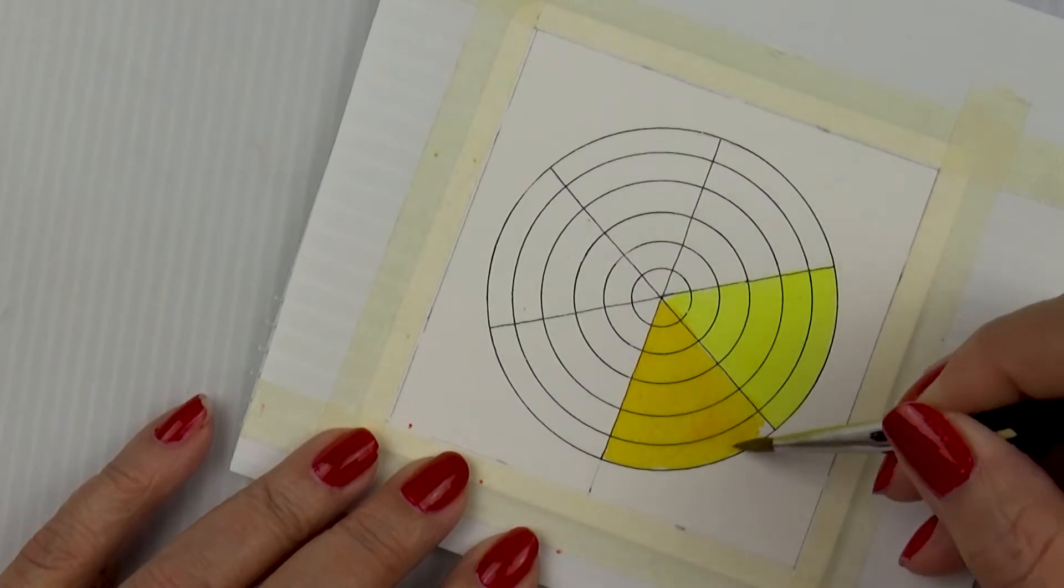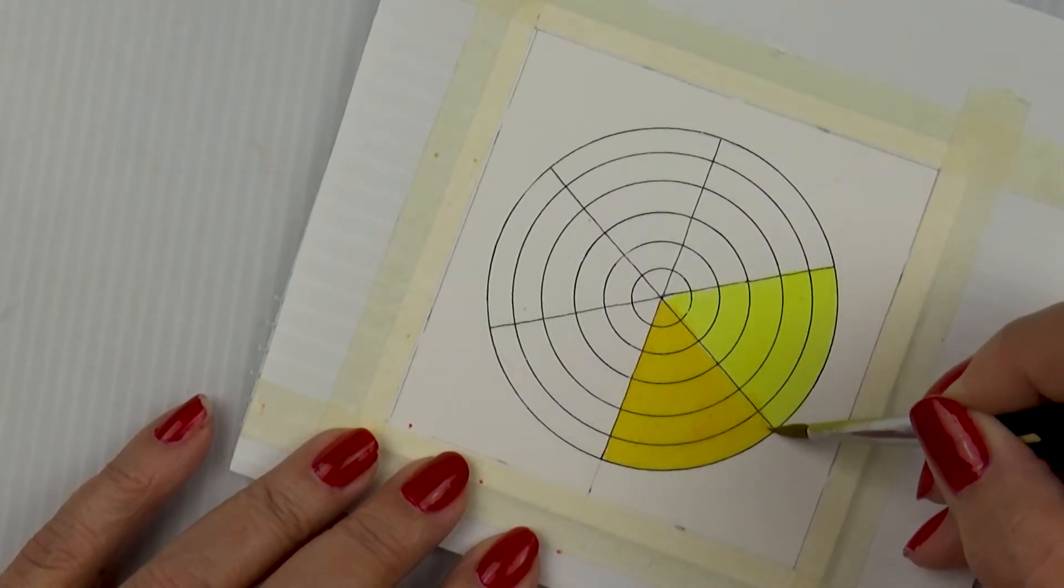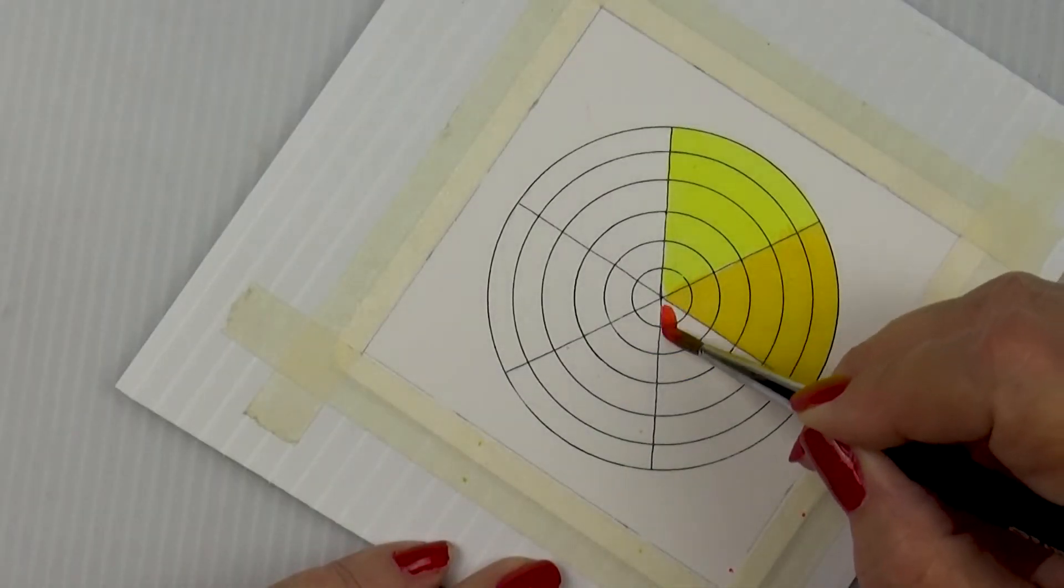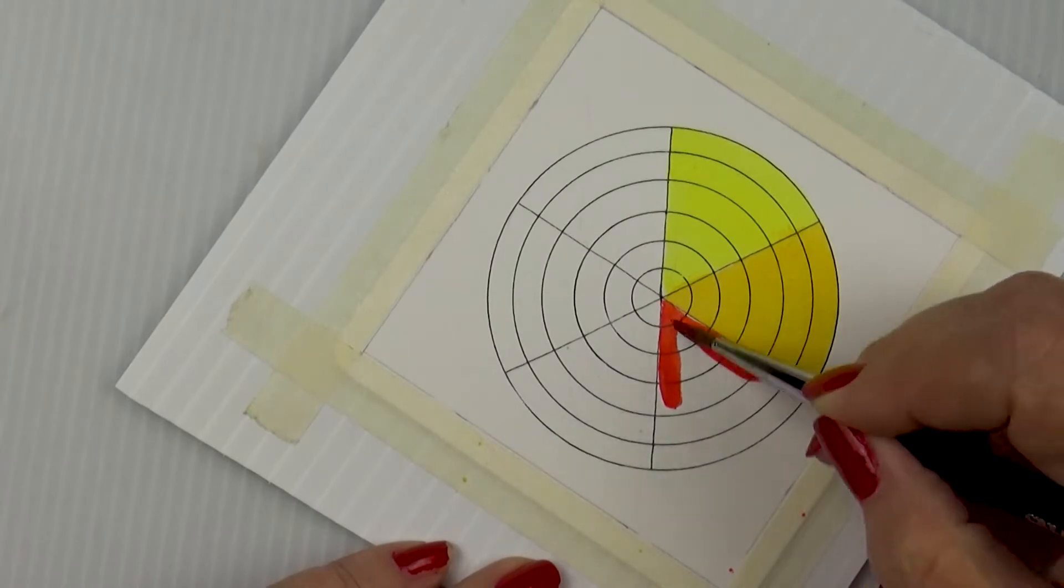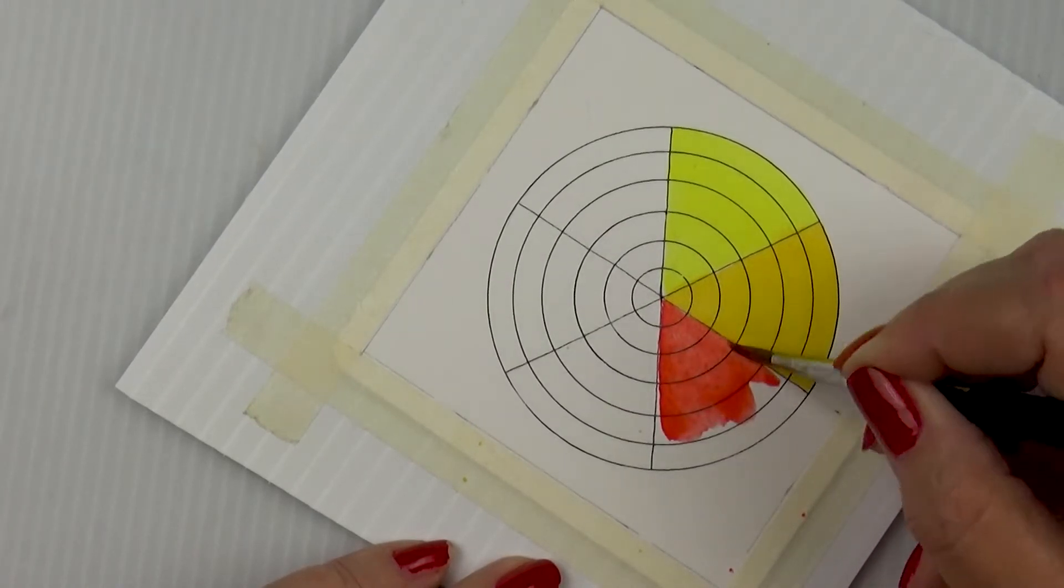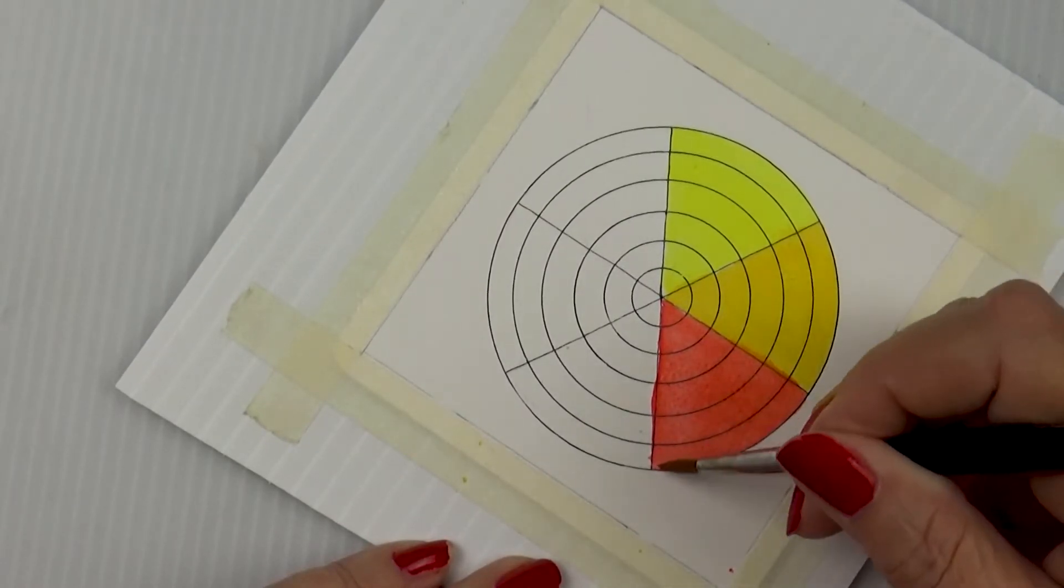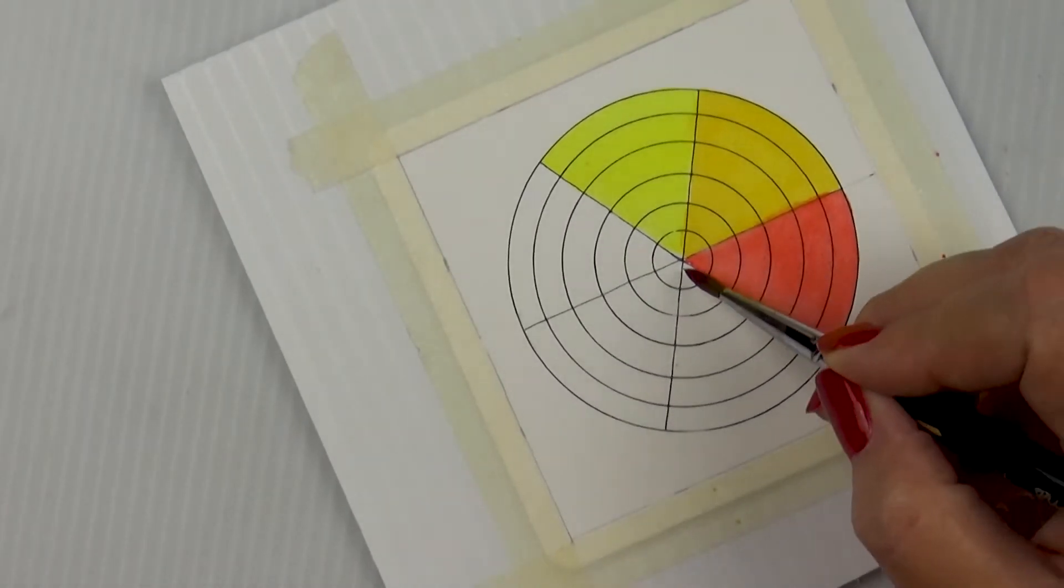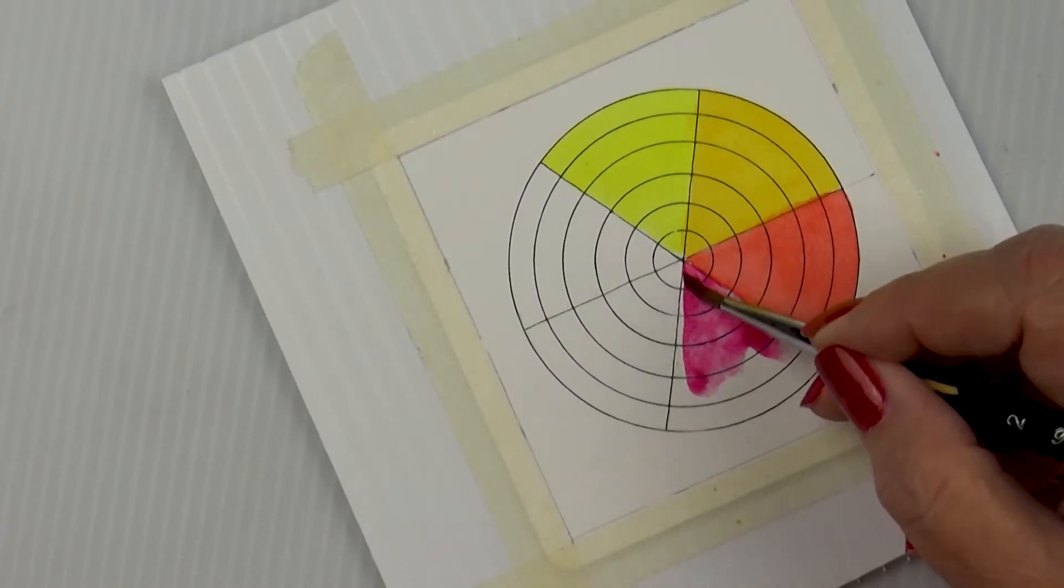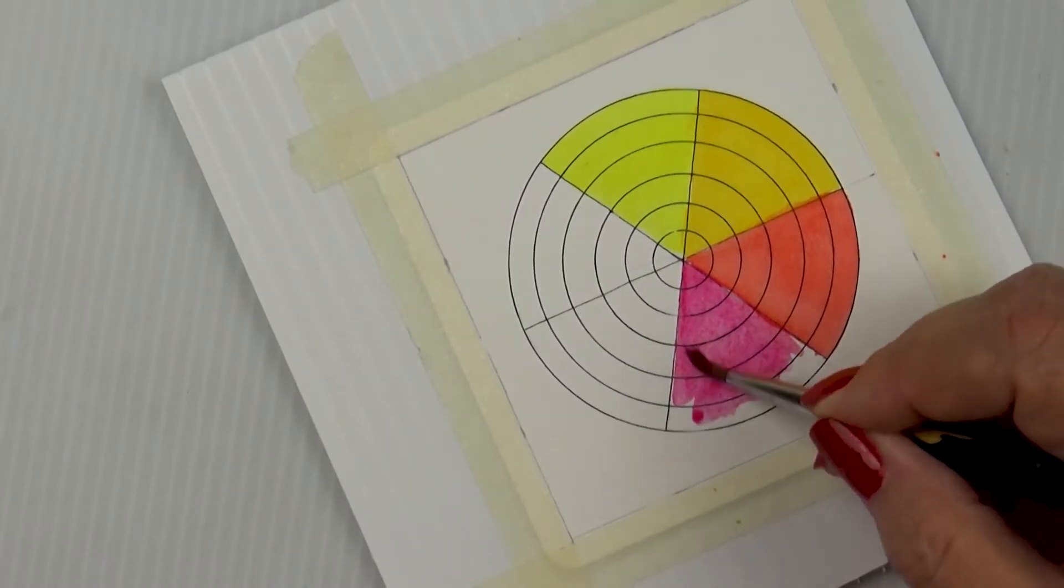Today I'm going to share my project with you a little bit differently. I'm going to tell you how I did it step by step. I used the Daniel Smith Essentials Mixing Set, and there are six colors in that set. So I made six concentric circles, then I divided them into six equal pieces of pie.